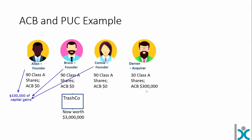Darren now has an ACB of $300,000 associated with his shares acquired from Alan, Bruce, and Connie of TrashCo. He's in a minority shareholder position — 10% of shares, 30 out of 300 issued. But there's still no paid-up capital in TrashCo. As part of this deal, Alan, Bruce, Connie, and Darren all agreed that Darren would also inject some capital into TrashCo — presumably to increase its value, maybe allowing TrashCo to acquire another asset or competitor.